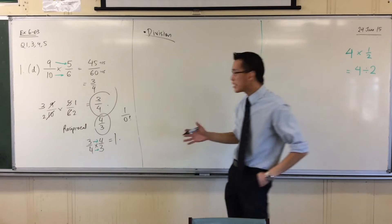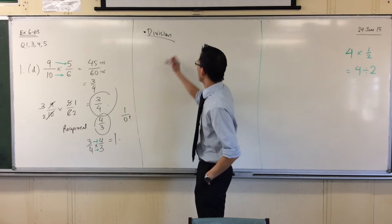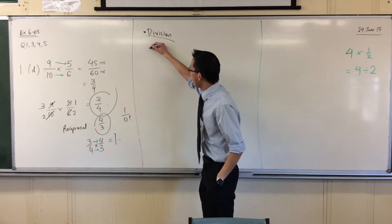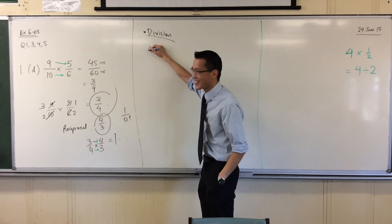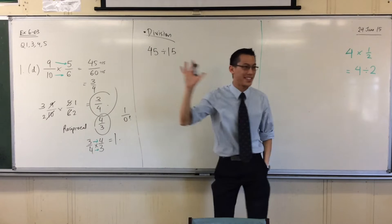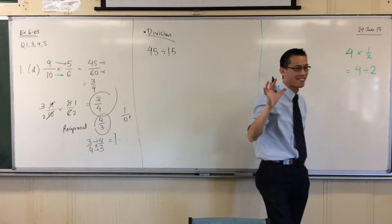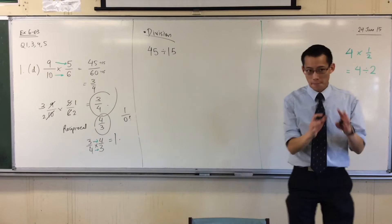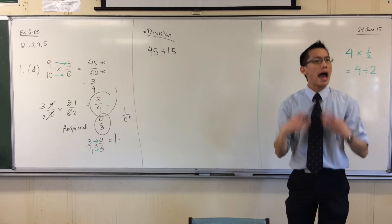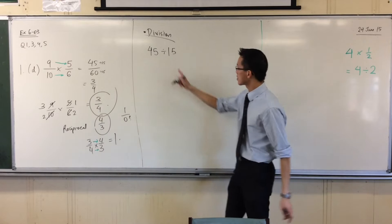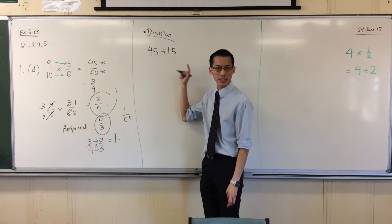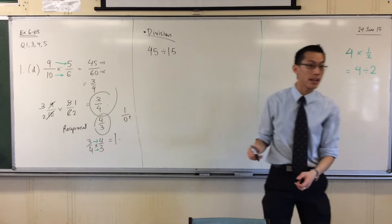Now if I say something like — well, that's a really bad word, but anyway. If I say something like 45 divided by 15, because we did this just now, right? Think before, we were talking in words, right? How would you phrase what this is actually calculating? What would you say, Ethan?